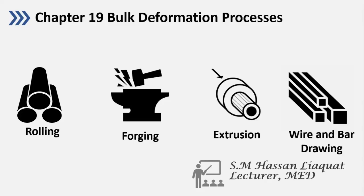Bismillahir Rahmanir Rahim. Assalamu alaikum wa rahmatullah. Welcome to the first lecture of week 5. In the last week we were discussing Chapter 19, that is Bulk Deformation Process. In that chapter we discussed the rolling operation. Now in this week we are going to discuss the forging and extrusion process. So let's start with the forging one.